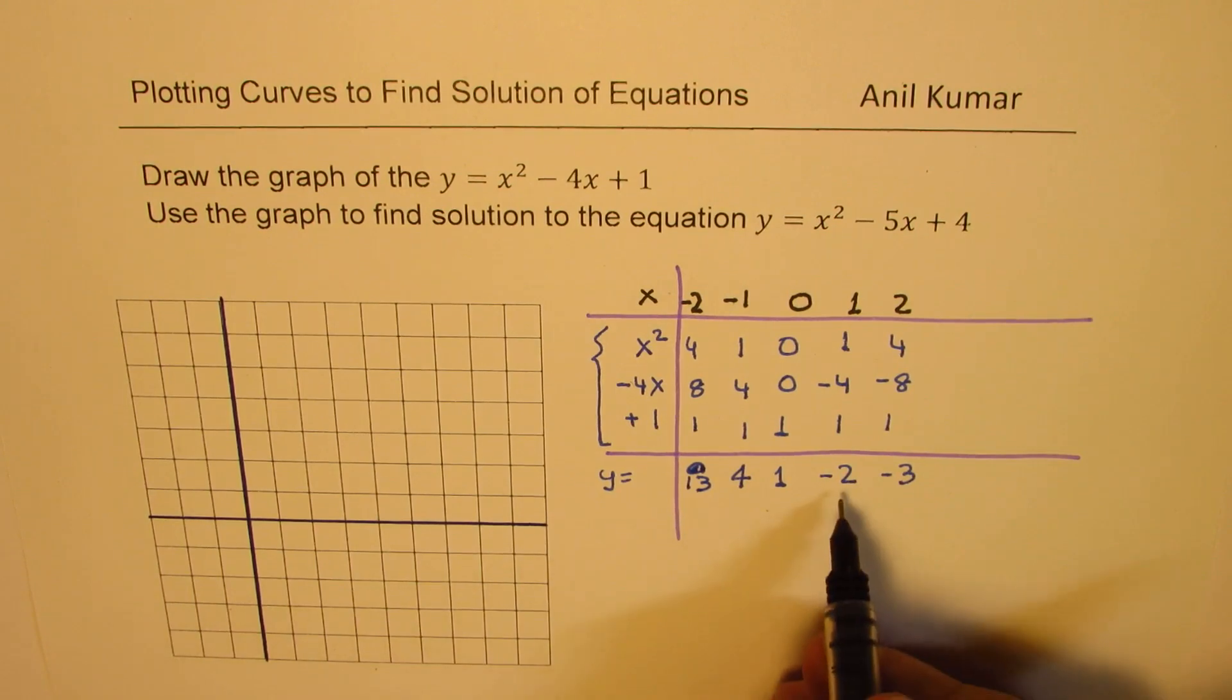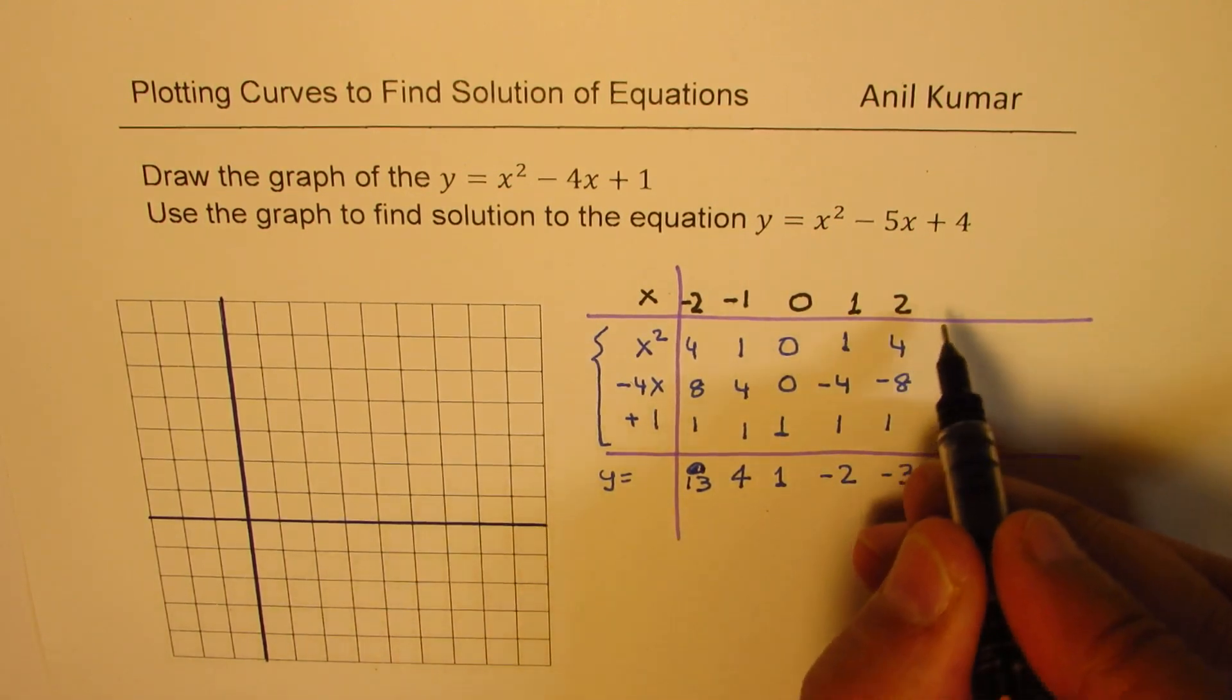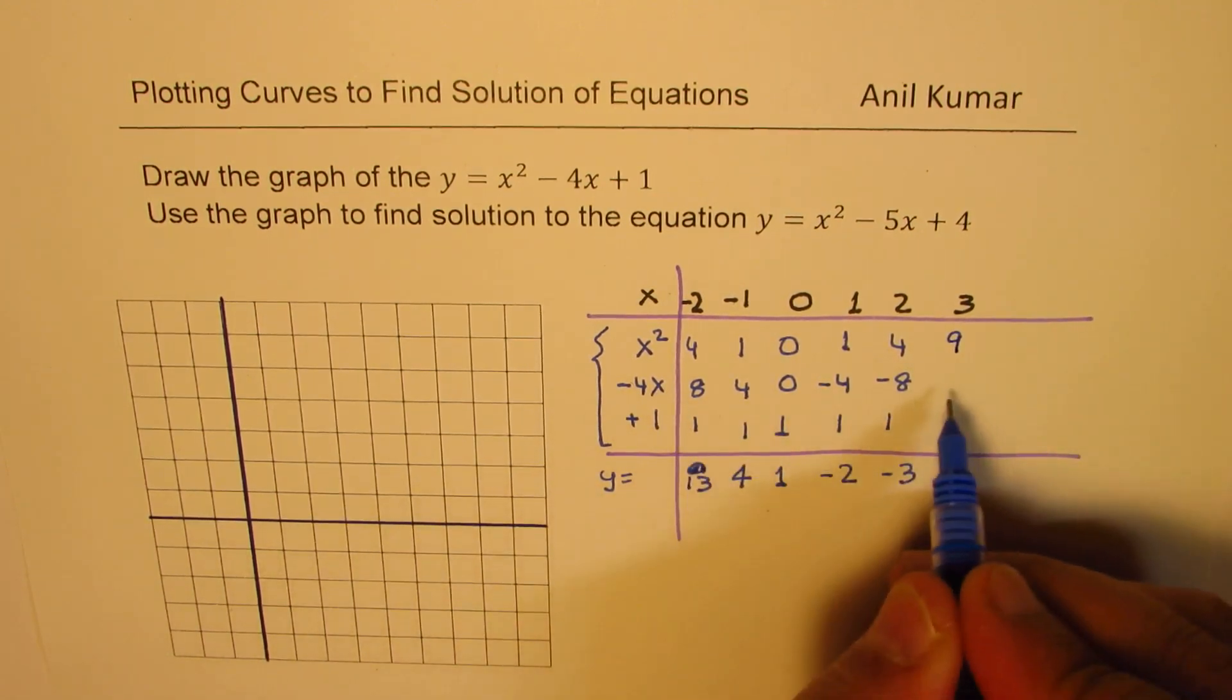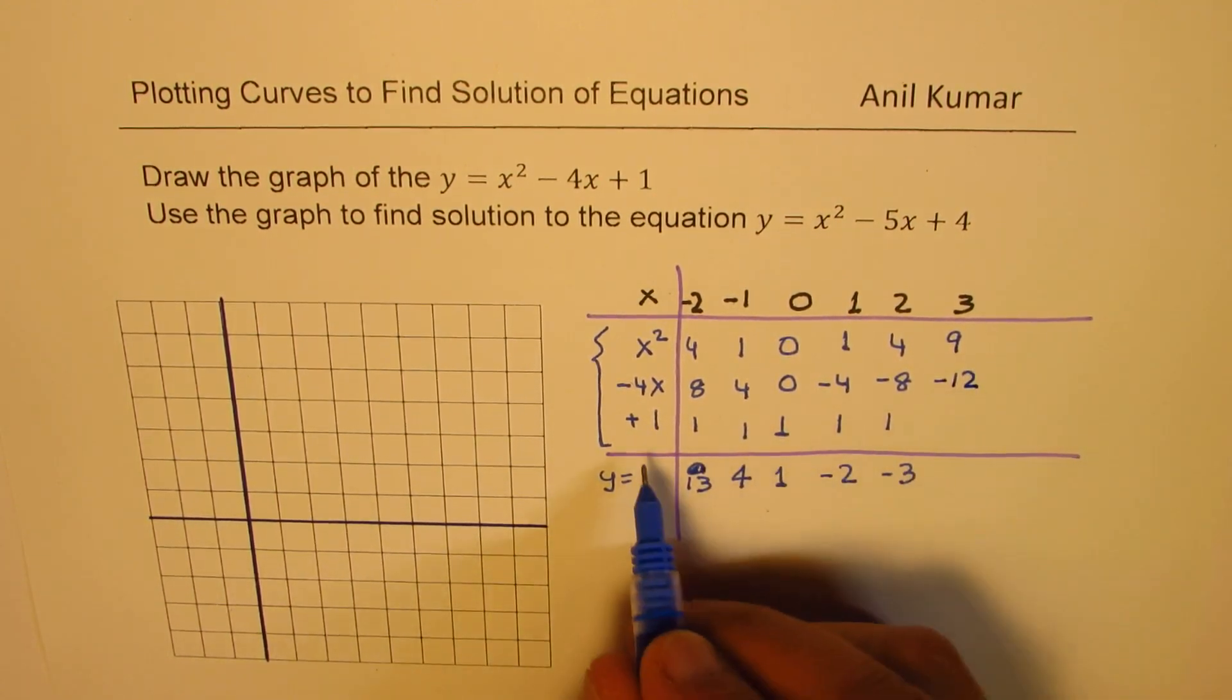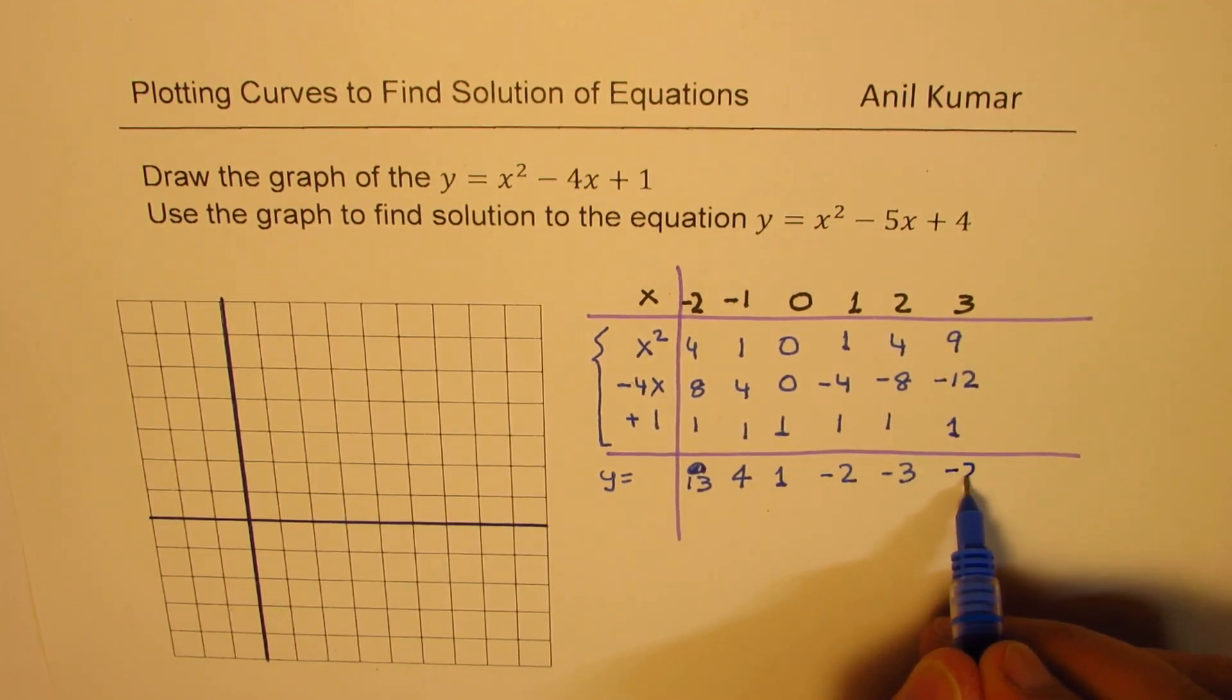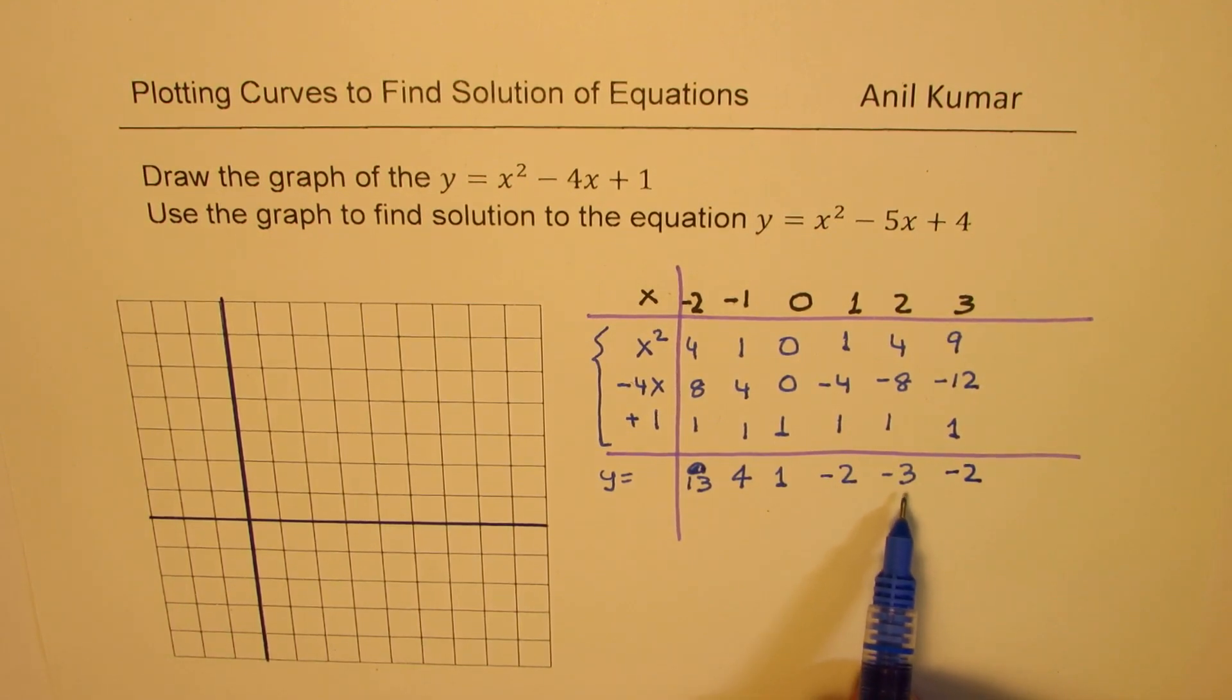So let's continue with some more values on the right side. So if I substitute 3 here I get 9 minus 12 and plus 1, which is minus 2. So here you see now we got kind of a minimum at minus 3 and now it is going up.